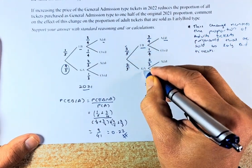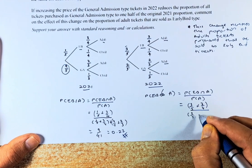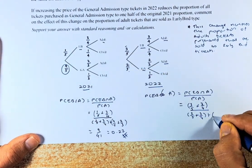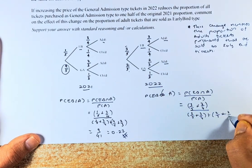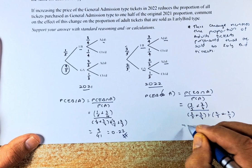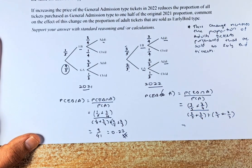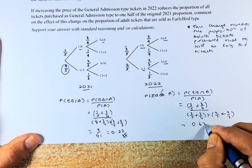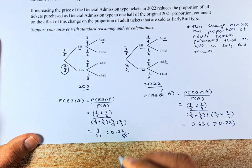And then we are going to divide that by adult. So it could be early bird adult or it could be general admission adult. So it's going to be three-fifths times three-quarters plus two-fifths times two-thirds. Now since I have no time to do the calculation, we are just going to put every number in the calculator and the answer will come up to 0.63, which is more than 0.22 in 2021.